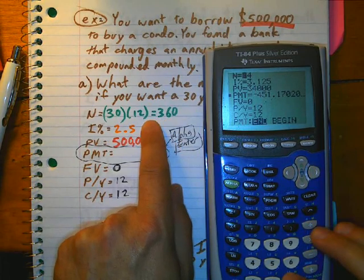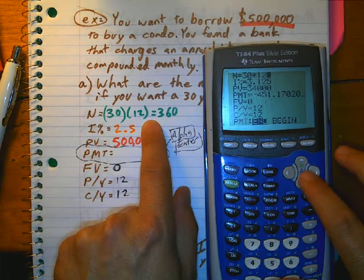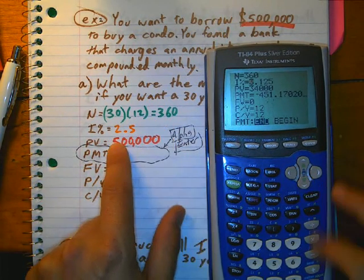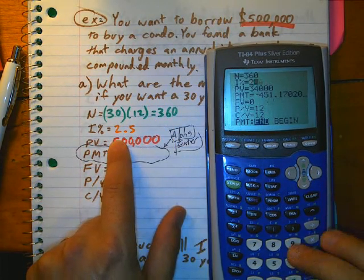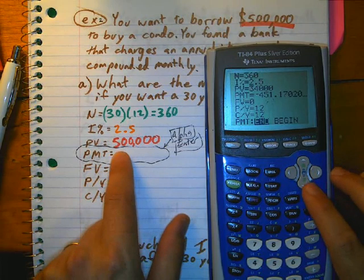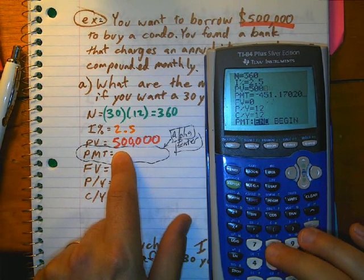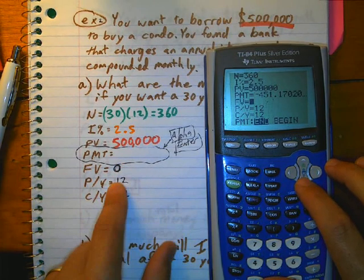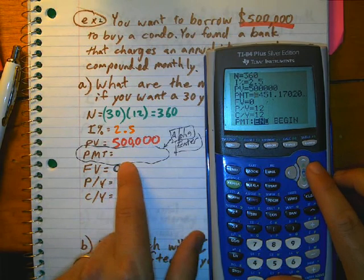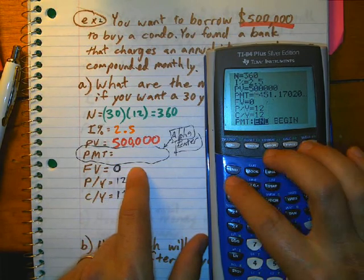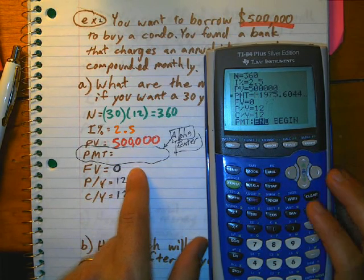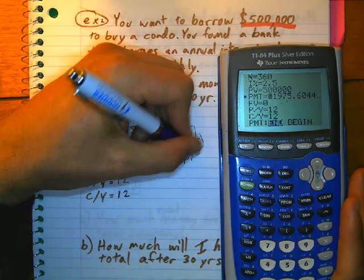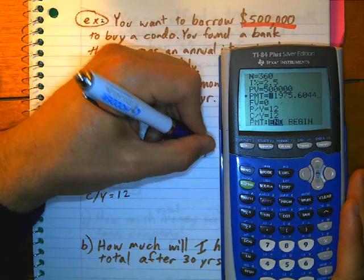So, 30 times 12, 360. Interest rate, 2.5. Half a million. I'm going to try to figure that one out. Zero. So, I'm here at PMT. I'm going to hit alpha, enter,